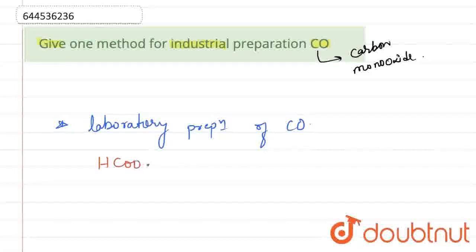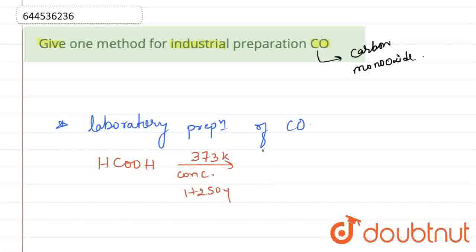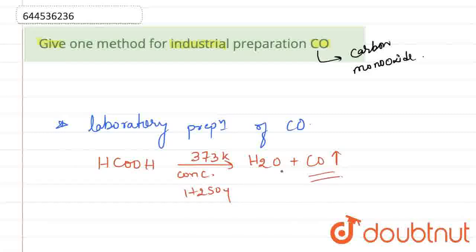We have formic acid, that is HCOOH, and at 373 Kelvin temperature in the presence of concentrated H₂SO₄, what happens is that H₂O and CO are released. This formation takes place where water and carbon monoxide are formed. So this is one of the methods for the laboratory preparation of carbon monoxide.